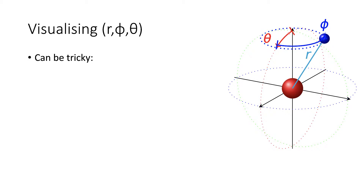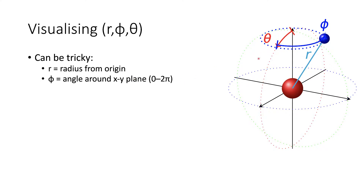Visualizing r, phi, and theta can be quite tricky. Theta rotates down from the z-axis, and phi rotates around the x-y plane, while r gives us the radius from the origin. The phi angle goes around the x-y plane and, because it's a full rotation, it can vary between 0 and 2π. Theta is the angle from the z-axis and can only vary from the positive z-axis down to the negative z-axis — an angle of π — so it's a half rotation.